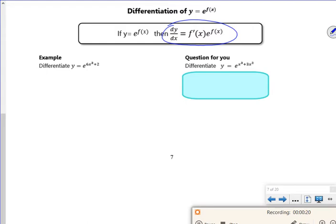The proper way to do it, I'm going to do it the proper way, and then I'll show you a shortcut. So the proper way is to say that u is 6x³ + 2, so y is e to the u. So du/dx is 18x², dy/du is e to the u.